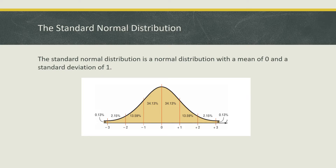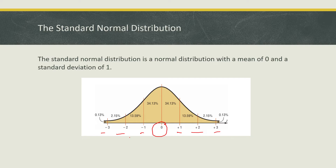So what is the standard normal distribution? The standard normal distribution is a normal distribution with a mean of zero and a standard deviation of one. The curve is symmetric, and each standard deviation unit is one. That is the definition: mean is equal to zero and standard deviation is one.